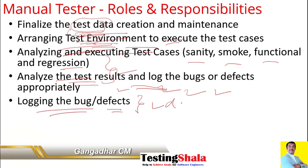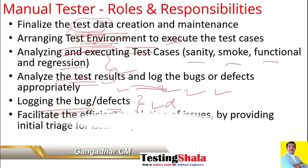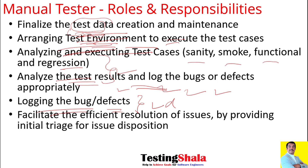When we find issues, we should log the bug or defect into the defect tracking tool. After logging, we need to reach out to the development team and provide all the necessary information so that they can resolve the bug or defect at the earliest. This is also a key responsibility of a manual tester.